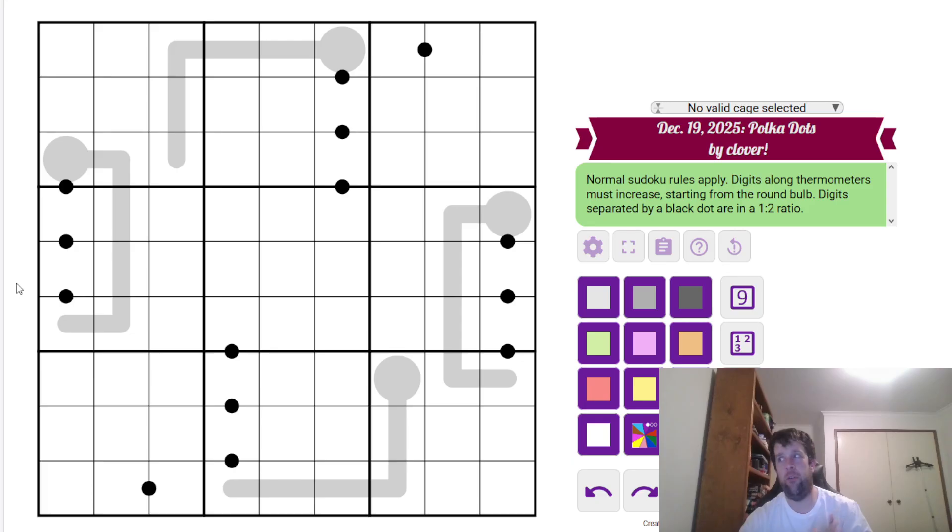This is a ratio thermo Sudoku. It means normal Sudoku rules apply. Each box, each row, each column must contain the digits 1 to 9 once each. We have some dots in the grid. These black dots indicate a relationship of 1 to 2. Therefore, one digit must be double the other. And we have thermometers. Not all black dots are given. Along thermometers, digits must increase from this end going all the way to the end. It means it can't repeat as well. That's all you need to solve today's puzzle. I'm going to jump into it now.